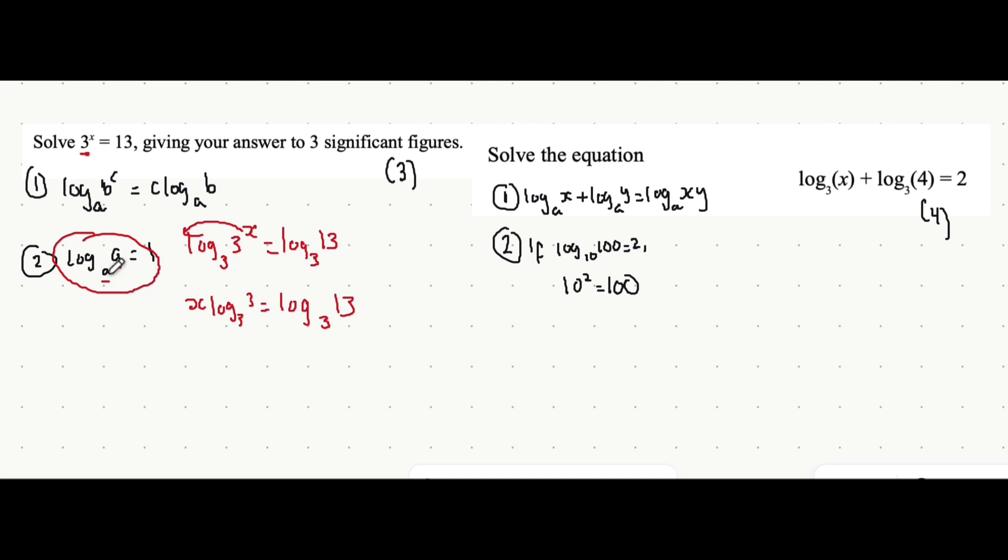The reason for that is because 3 to the power of 1 is equal to what's inside the logarithm. That's a fact. So we can say log base 3 of 3 is 1. So x multiplied by 1 is log base 3 of 13. And you can just put that into your calculator to get the answer to 3 significant figures. So I'm just going to quickly do that. And that will give you an answer of 2.33.